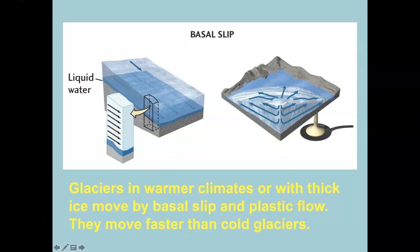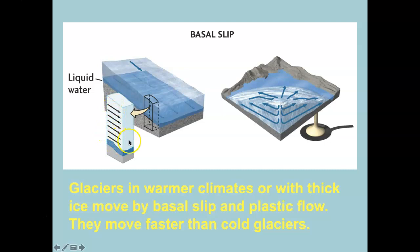Basal slip occurs where it's a little warmer. In basal slip, movement is along a layer of liquid water between the ice and the rock, so the ice doesn't get stuck to the rock. The velocity of all the ice is pretty consistent — the whole package of ice moves downslope on top of that water layer at the same velocity. This happens where the climate is warmer, and these glaciers move faster than the cold glaciers experiencing plastic flow.